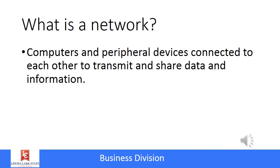One of the first things we need to talk about is a network. A network is a group of computers and peripheral devices that are connected to each other to share data and transmit information back and forth. For example, two computers may be connected to share files or send email, or they might be connected to share the same printer. The internet actually is a very large computer network.